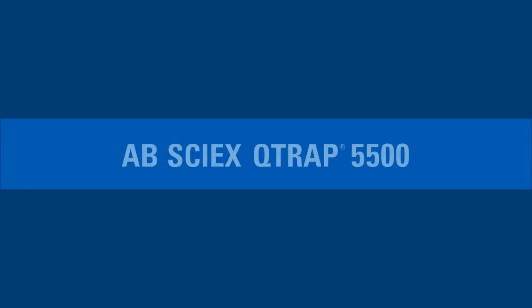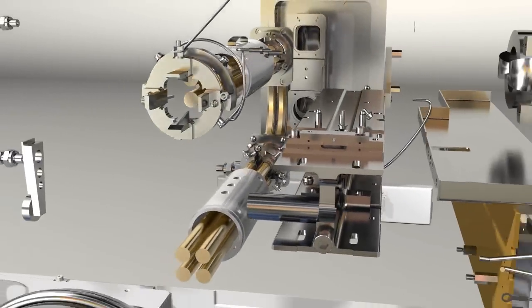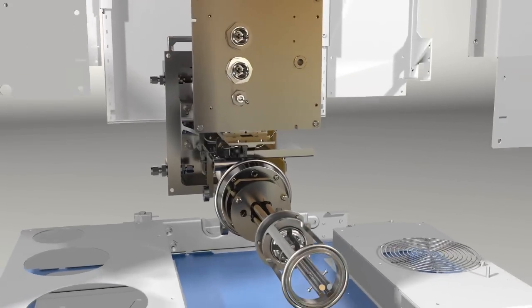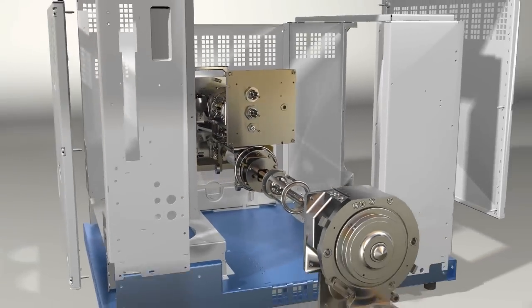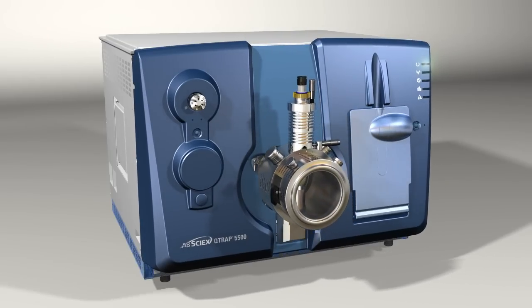The AB Sci-X QTRAP 5500 system is the highest sensitivity quantitative mass spectrometer available, but also integrates a high-speed linear accelerator trap to enable unique quantitative workflows. One of these workflows is triple-trap scanning, where analytes are identified and quantified at the same time.